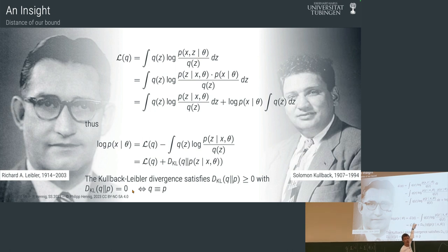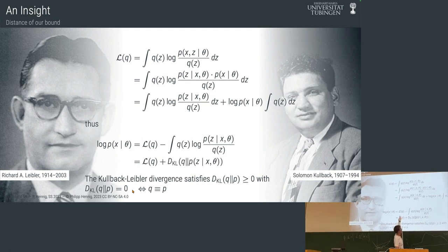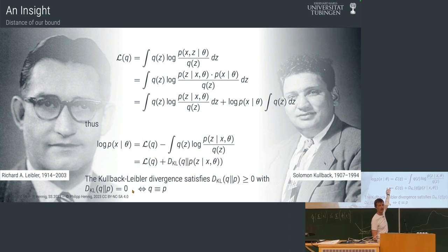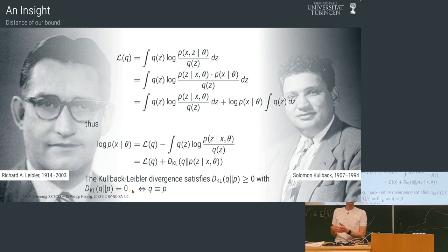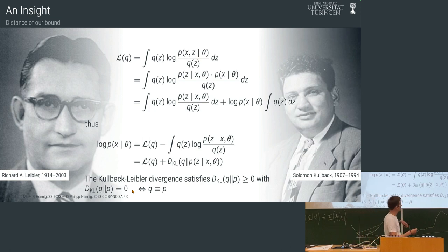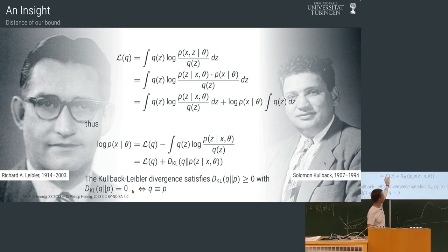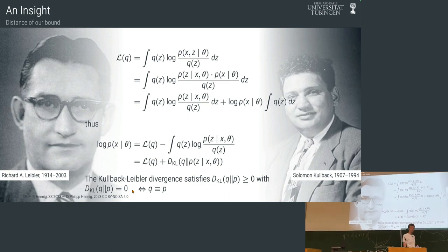And that's the entire trick. This term tells us which q to choose if we want to make this bound tight. If we set q equal to the posterior p(z|x, theta), this KL term will be zero, and therefore our lower bound on the evidence is exactly correct — it's a tight bound.